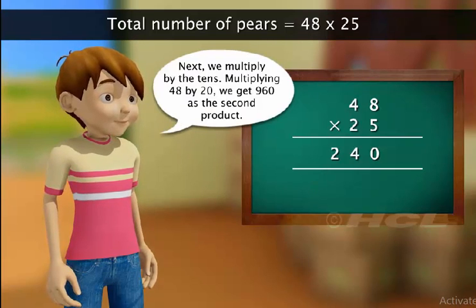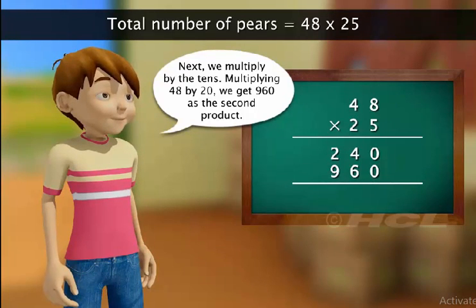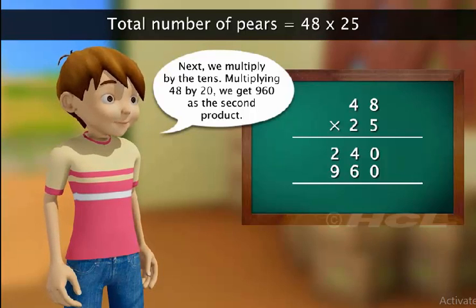Next, we multiply by the 10s. Multiplying 48 by 20, we get 960 as the second product. That is right, Sam.